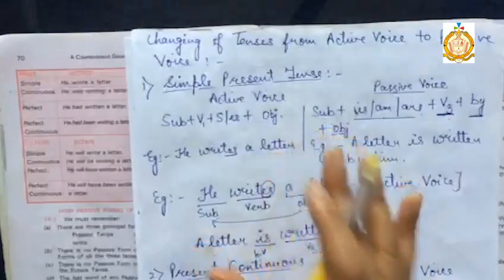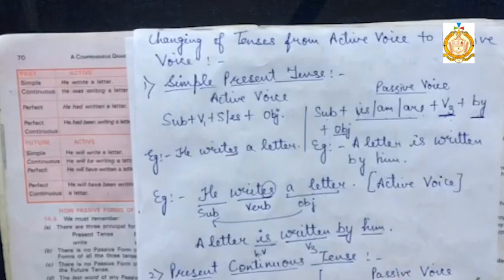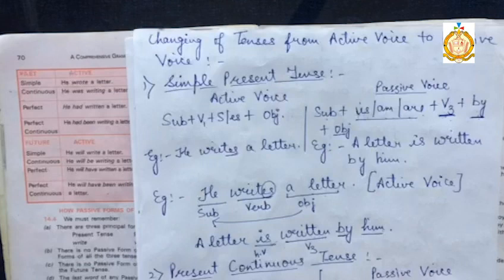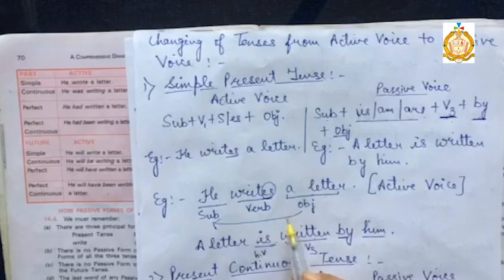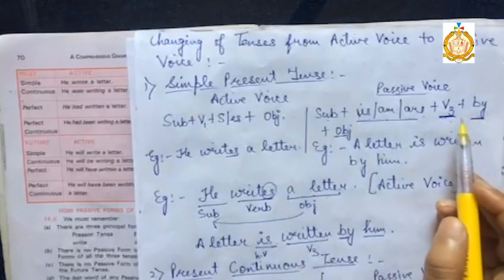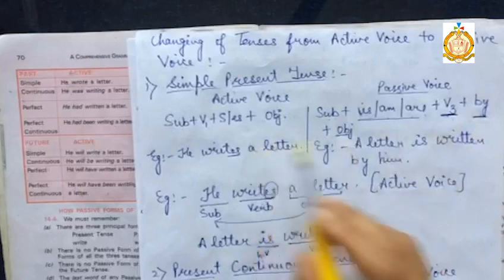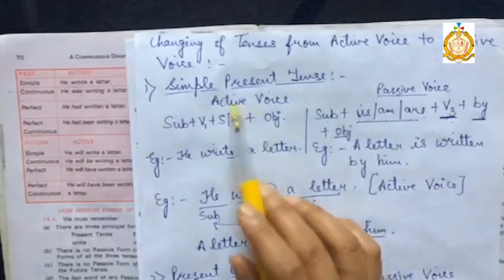Before beginning, please see to it that you don't get confused between direct and indirect speech and active and passive voice — these two are different sections. In active and passive voice, we will not change the tense of the sentence. If it is in present tense, it will remain in present tense only; the changes will be according to the rules of changing a sentence from active voice to passive voice.